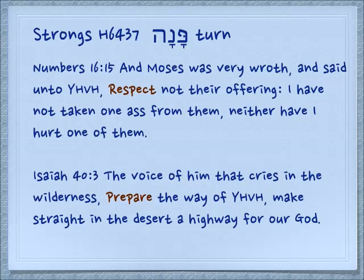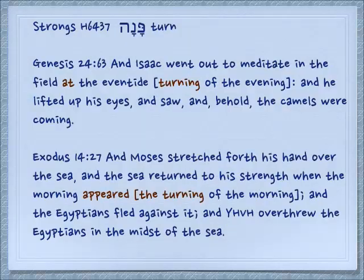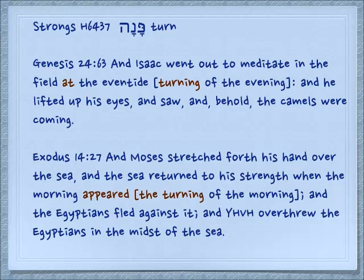Again, with the idea of turning the condition of something, Isaiah 40.3: 'The voice of him that cries in the wilderness, prepare the way of Jehovah, make straight in the desert a highway for our God.' It's used with respect to time when the time of day is changing. Genesis 24.63: 'And Isaac went out to meditate in the field at eventide' — in other words, at the turning of the evening. Exodus 14.27: 'And Moses stretched forth his hand over the sea, and the sea returned to its strength when the morning appeared,' in the turning time of the morning.